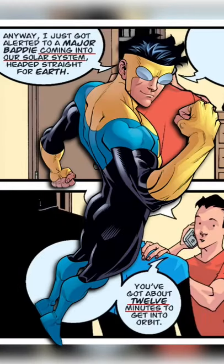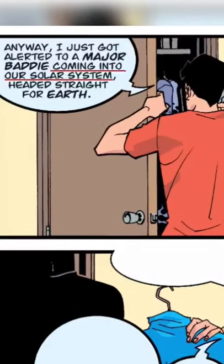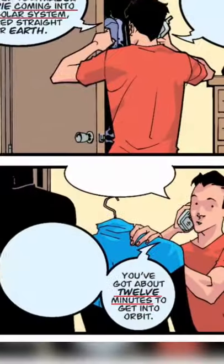In this panel, Mark Grayson, Invincible, gets a call from Omni-Man telling him that a major baddie had just entered the solar system, and that Invincible has about 12 minutes to get to orbit.